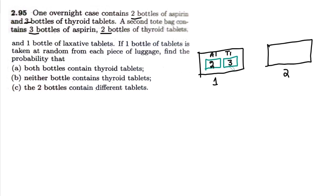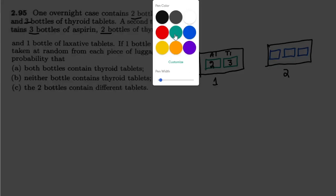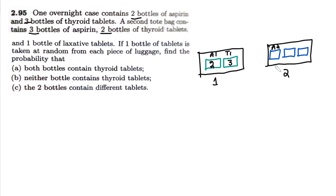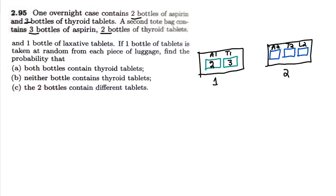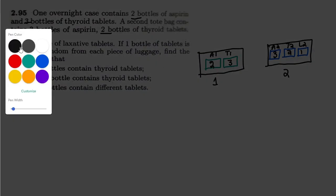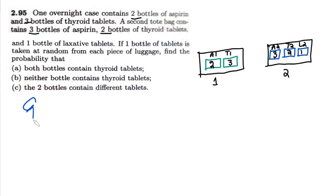So there are two aspirin and three thyroid in bag one. Similarly in the second bag we have three bottles. The first type is aspirin — let me call it A2 because it's from the second bag. There are also two bottles of thyroid, which I'll call T2, and one bottle of laxative tablets, which I'll call L2.